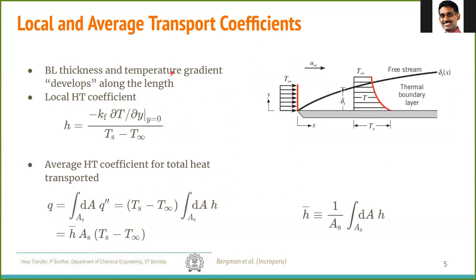What we have studied so far is the local transport coefficient. It is called local because h is evaluated from ∂T/∂y at y=0 at a given location x. Since the boundary layer thickness varies along the length, the local temperature gradient also varies along the length, and therefore this h is a local heat transfer coefficient that depends on the position x along the surface.